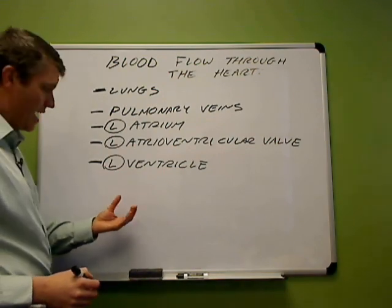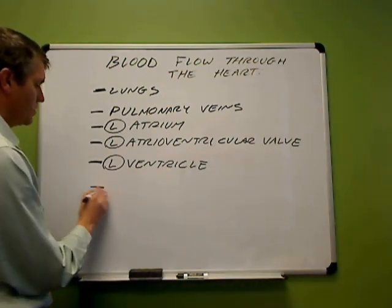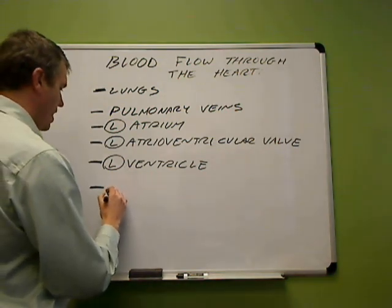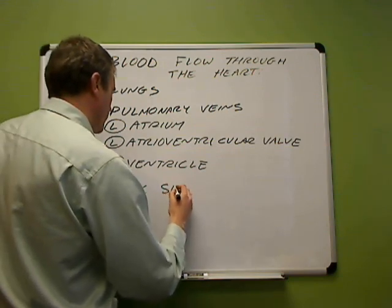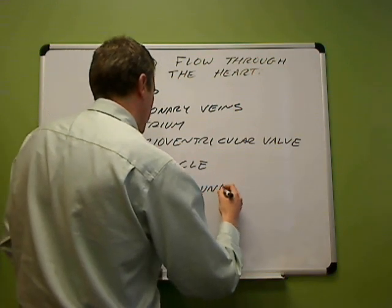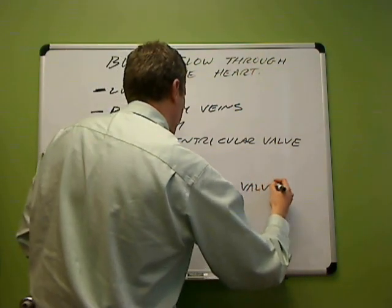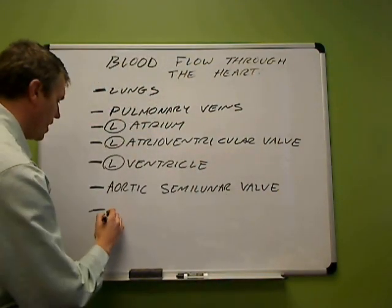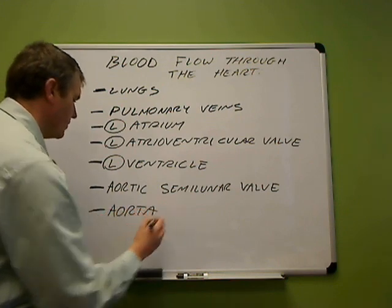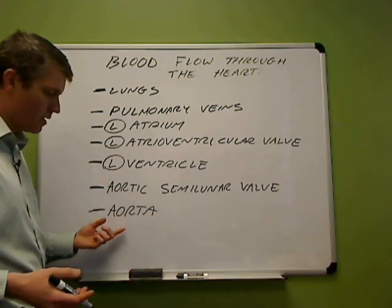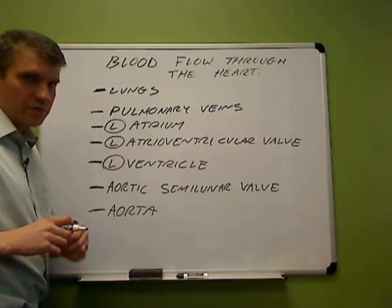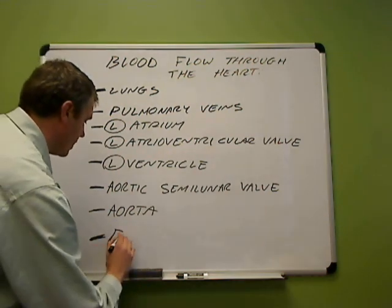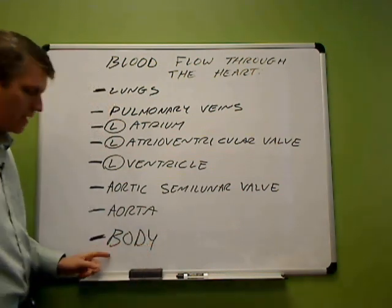After it passes through the left atrioventricular valve, it will be in the left ventricle. The left ventricle contracts and the blood gets pushed through the next valve, which is the aortic semilunar valve. After that blood passes through the aortic semilunar valve, it will be in the aorta — the largest artery in the body, the first one coming off of the heart. From there, the blood travels through various arteries to different areas of the body, and we're back to where we started.